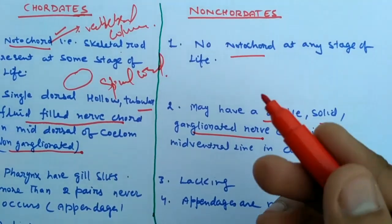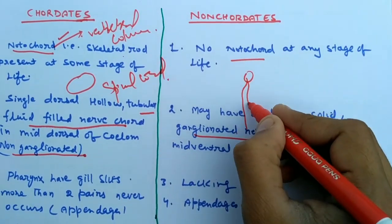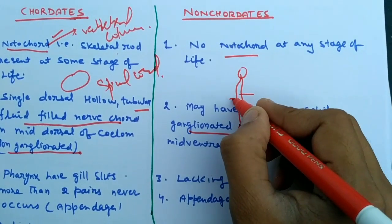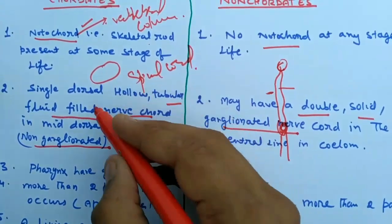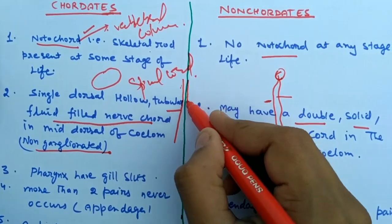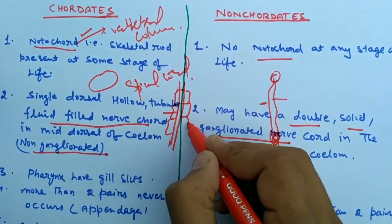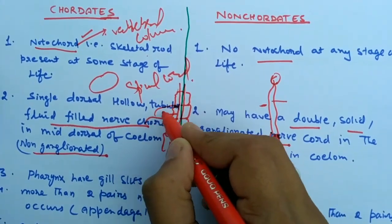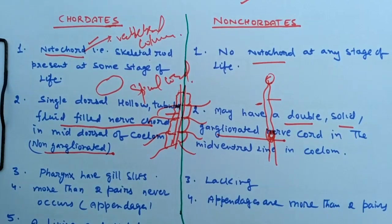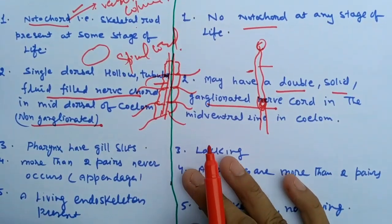In the nervous system of the cockroach and other non-chordates, you will see scattered ganglia connected by neurons. In chordates, there is a single dorsal hollow nerve cord embedded in the vertebral column, from which various spinal nerves arise, controlling reflex actions and autonomic responses of the body.